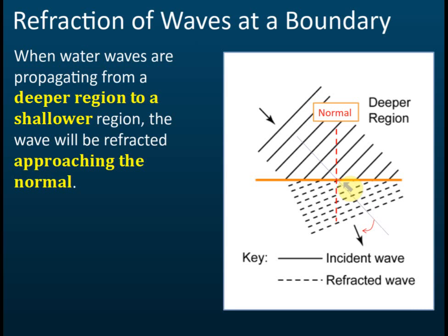The direction is always 90 degrees to the wavefront. From the diagram, we can see that initially this is the direction of the wave, and after refraction the direction becomes closer to the normal. So from a deeper region to a shallower region, the wave is refracted closer to the normal.